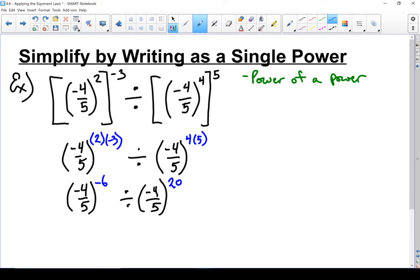From here, I'm going to use my quotient of powers rule. Quotient of powers rule states: if you're dividing two exponential expressions with the same base, you can subtract the exponents. My base stays the same: negative four-fifths.